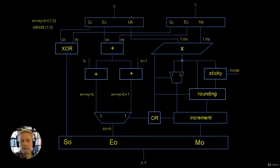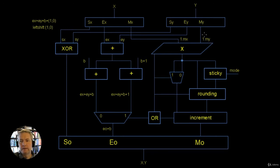We have the mantissa for X, which is the 23 bits coming in here, and the mantissa for Y, which are the 23 bits coming in here. Between the input point and the multiplier I've called it 1.MX and 1.MY, because we've appended the 23-bit mantissa with an extra bit — the 1 is the 24th bit, or the hidden bit. So now we've got a 24-bit value for Y and a 24-bit value for X, and we're going to multiply these together to get a 48-bit output.